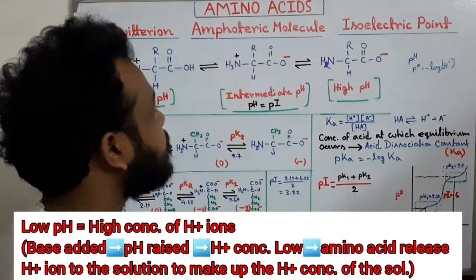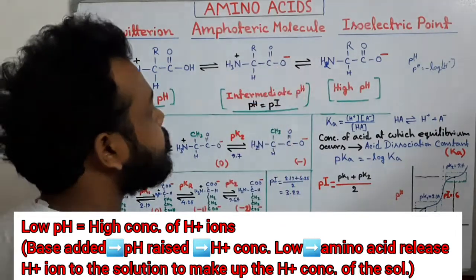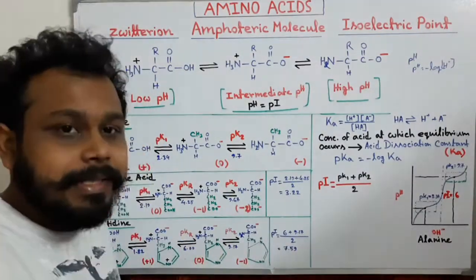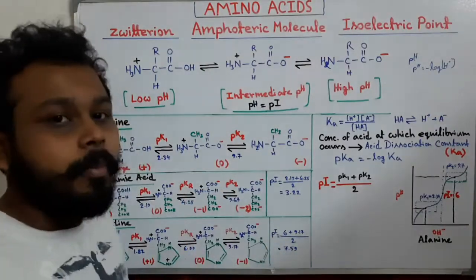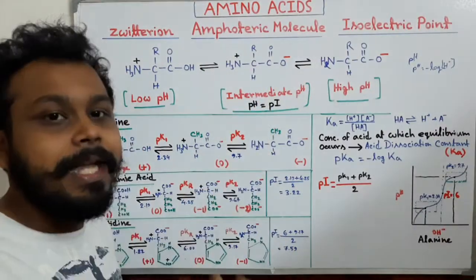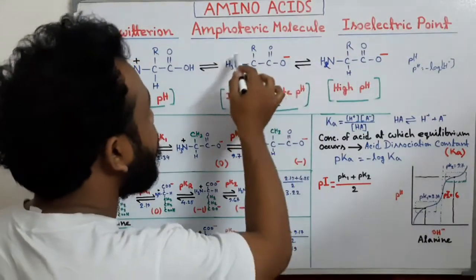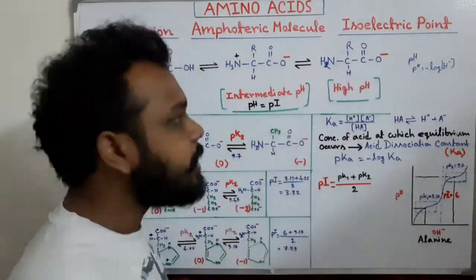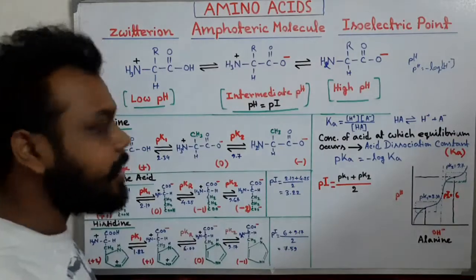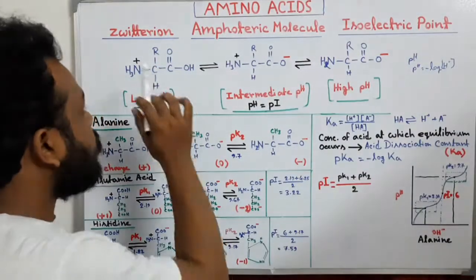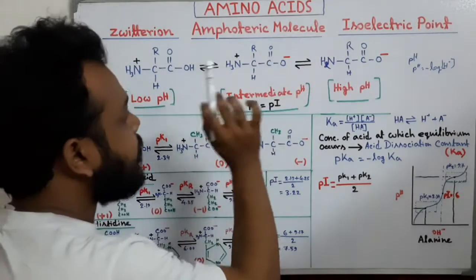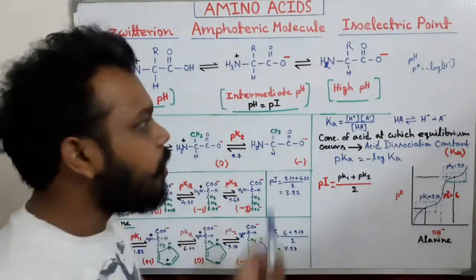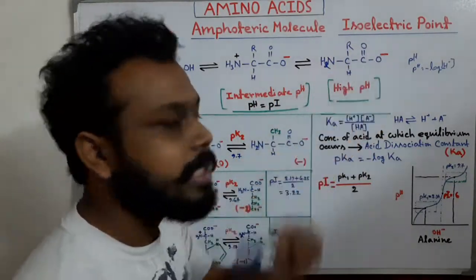When we add some base into the medium, the hydrogen ion is released from the COOH group. When we add more base, more hydrogen will be released — next from the NH3+ group. So at low pH the overall charge is positive, at intermediate pH the net charge is zero, and at high pH the net charge is negative.